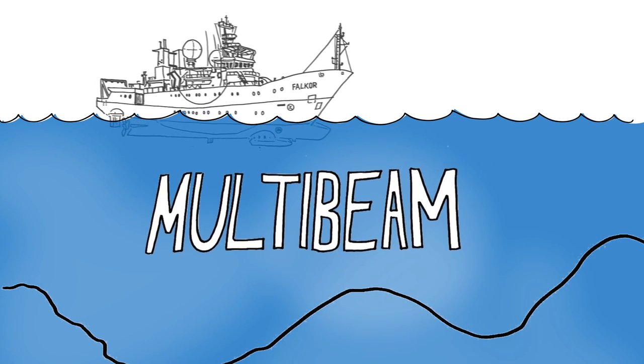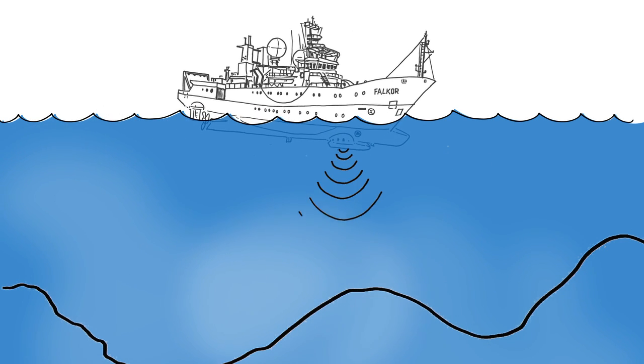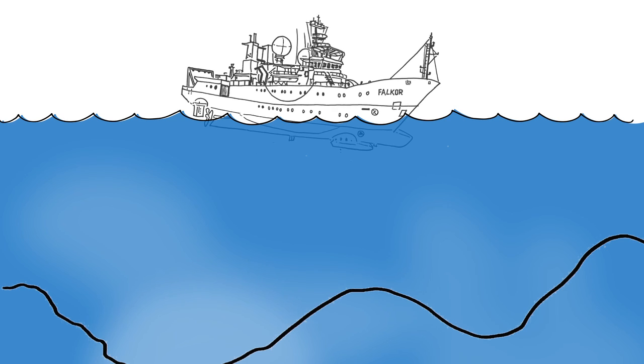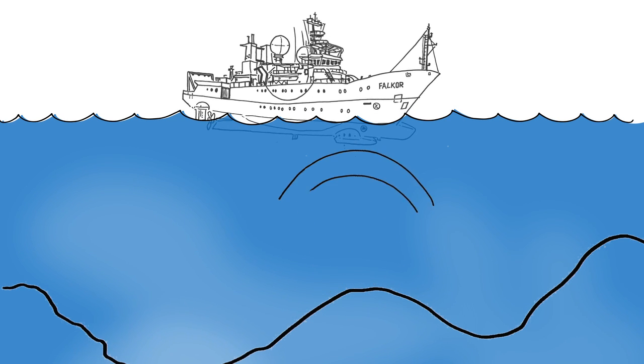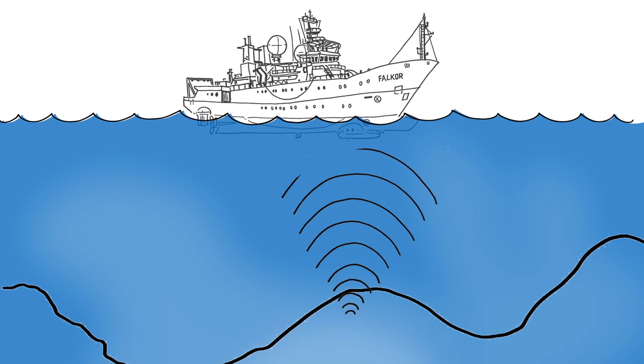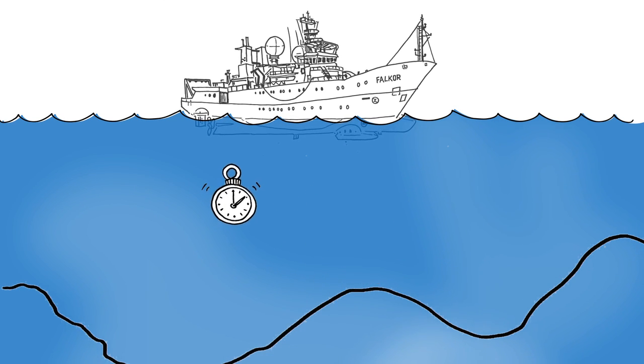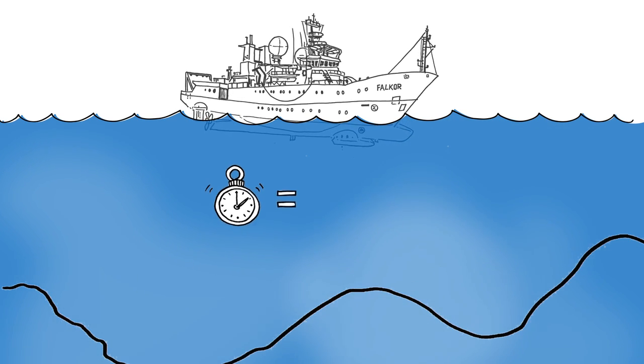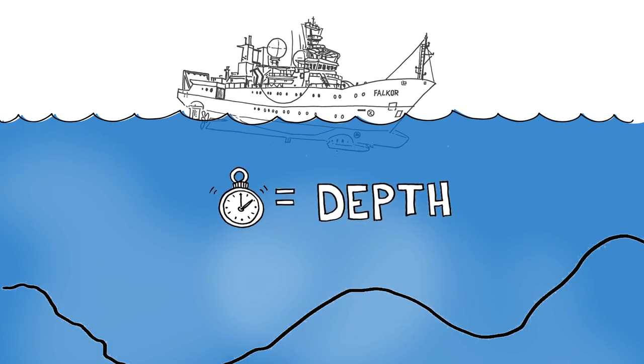For that we use our multi-beam. FALCOR's multi-beam emits pings, each including 432 beams down towards the ocean floor. Those beams bounce back to the ship's receivers. By measuring how long it takes the ping to bounce back we can calculate the depth of the ocean.